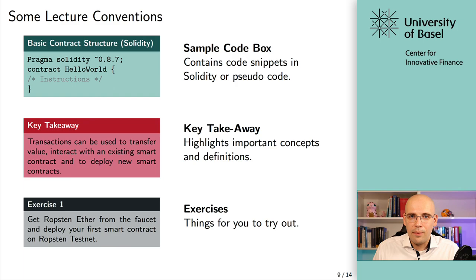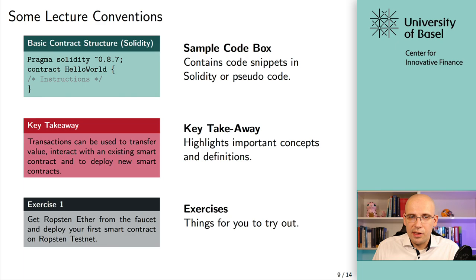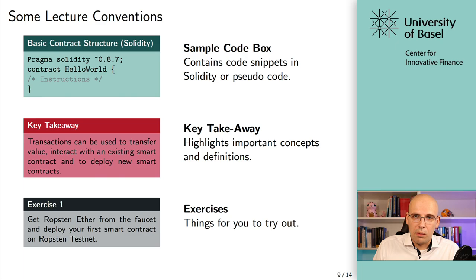Throughout the slide deck there are different colored boxes to make it easier when you're revisiting the material. There are sample code boxes — green boxes — that are particularly useful for group projects when you're looking for specific code snippets. Then you have the key takeaways in red boxes — important statements on the slides. And then you have extra exercises in black boxes, which are hands-on exercises. There will also be a multiple choice quiz at the end of each section so you can test whether you understood everything.